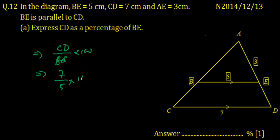Multiplied by 100. We divide by 5: 100 divided by 5 is 20, and 7 times 20 equals 140. So it is 140 percent.